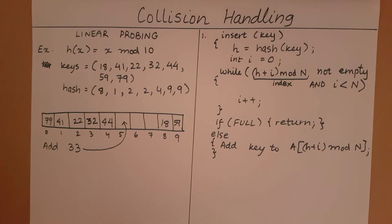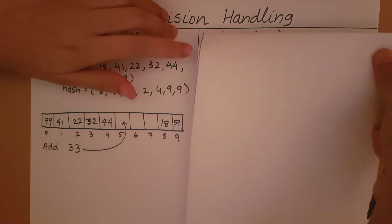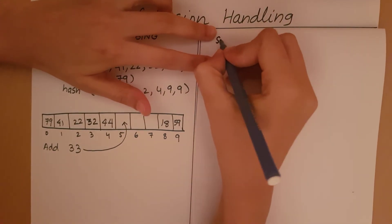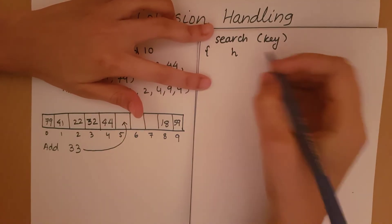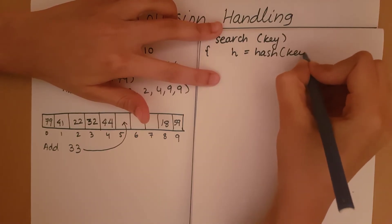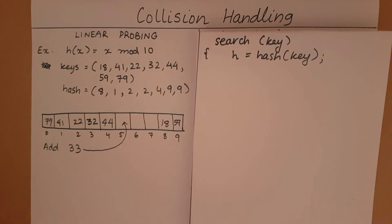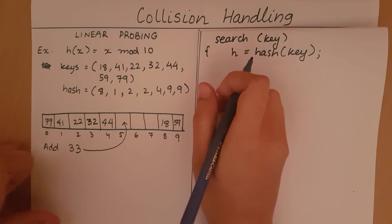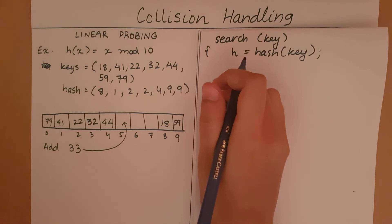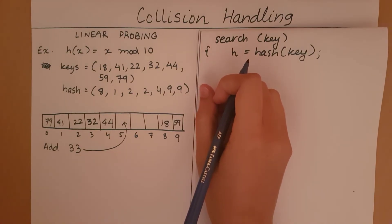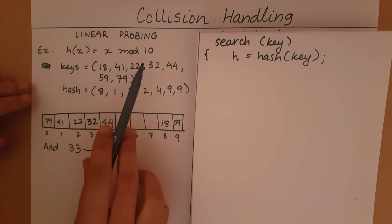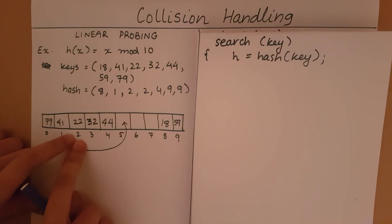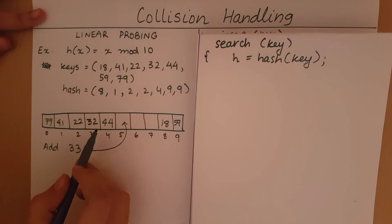Now that we understand how to insert a key, let's see how to search for a key. First, I get h as the hash value of the key. I go to the index of the hash value and search from that index, then the next, and so on, until I find my key or encounter an empty space. For example, searching for 32: 32 mod 10 = 2. I check index 2 — the value is not 32. I go to index 3 — the value equals 32. So it's found.